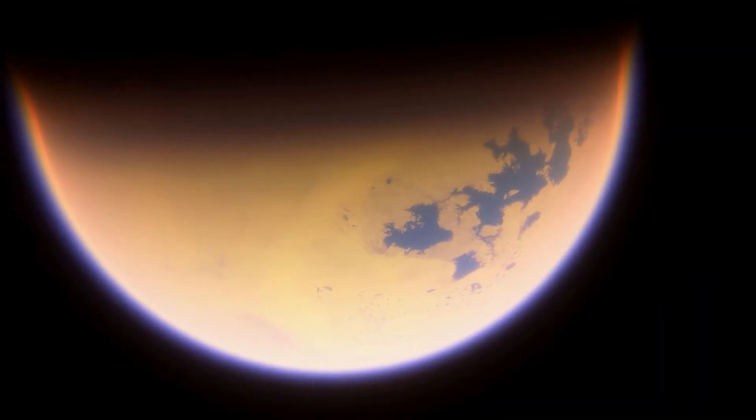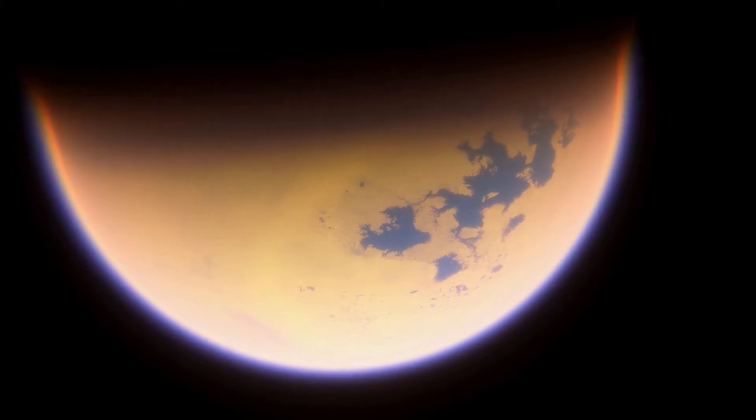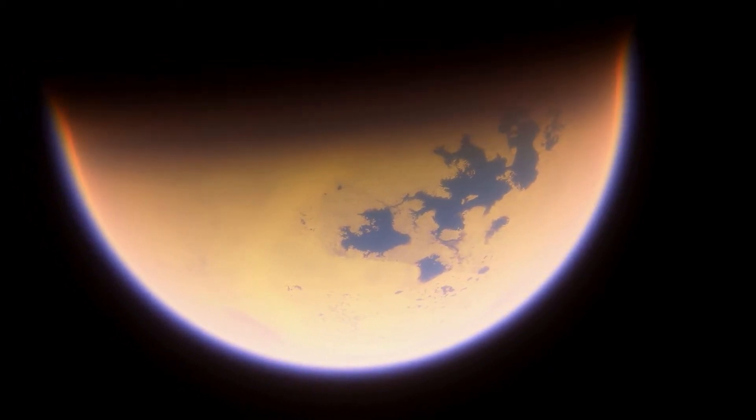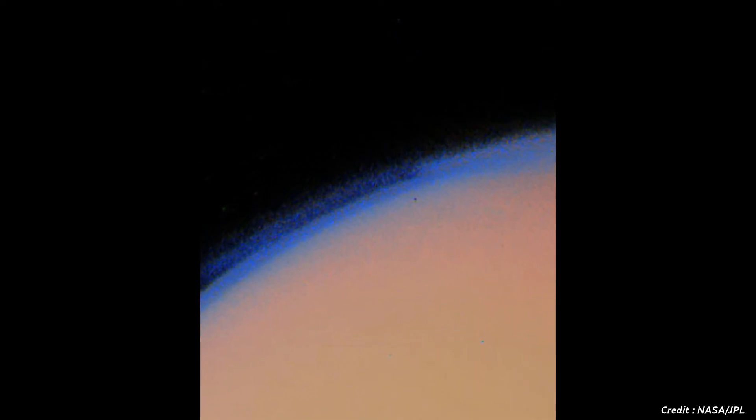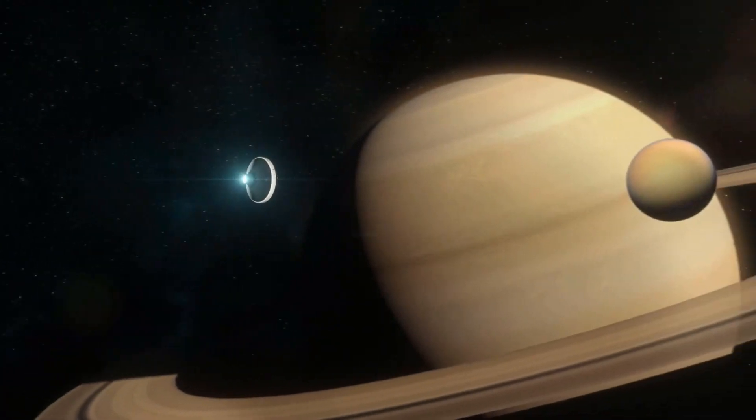During the flyby, Voyager 1 also encountered Saturn's largest moon Titan. The enhanced photograph reveals Titan's hazy nitrogen-rich atmosphere, which led scientists to theorize that seas of liquid methane and ethane might exist on the moon's surface, which was later confirmed by the Cassini mission back in 2004.